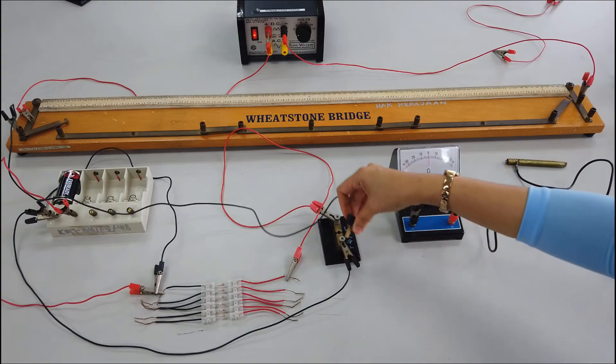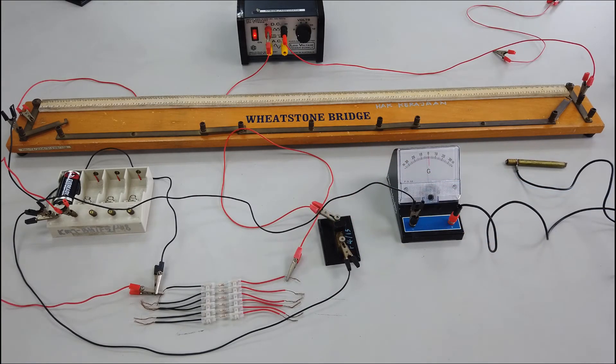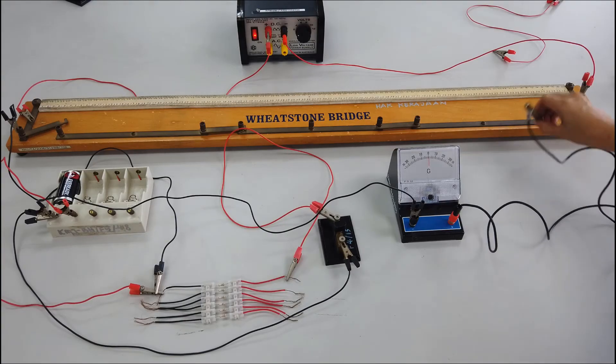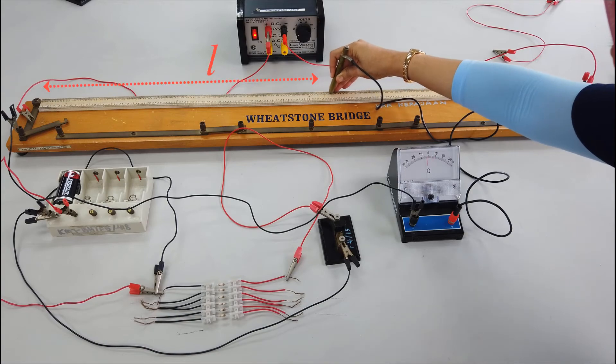Now let's determine the L. With both S1 and S2 closed, slide the jockey along the wire until the pointer of the galvanometer is at 0. This is L.